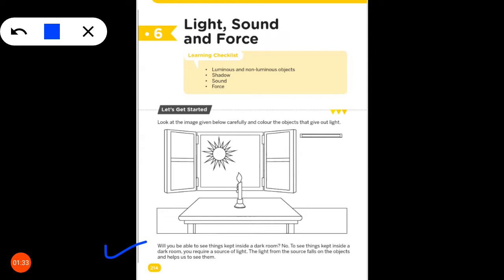Will you be able to see things kept inside a dark room? If there is a dark room, will you be able to see objects in it? No. To see things kept inside a dark room, you require a source of light. Without light, you will not see any object. The light from the source falls on the objects and helps us to see them.